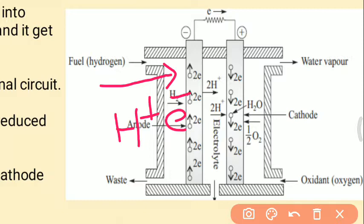After oxidation, the hydrogen is converted into H⁺ ions and releases two electrons. These electrons are transported through the external circuit to the cathode, whereas the H⁺ ions move through the electrolyte and reach the cathode. At the cathode side, the H⁺ ions and oxygen ions combine to form water. The electron travels through the external circuit while the H⁺ ion travels through the electrolyte.